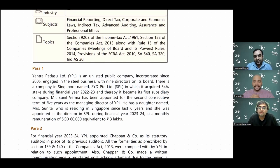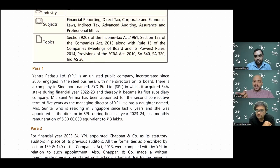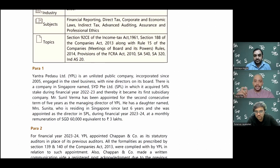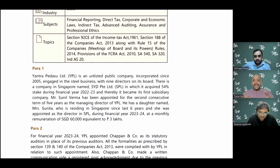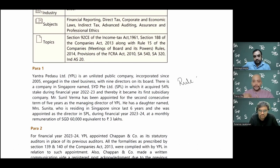For the purpose of GST, YPL and SPL are treated as related parties because the same control exists. Even under Customs Act, both parties are treated as related parties and transaction value is not applicable. We need to determine value in terms of rules. In GST, Rule 28 talks about open market value. In Customs, we have identical goods and similar goods valuation methods.